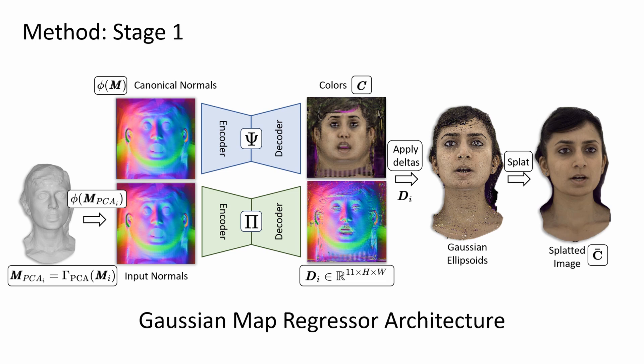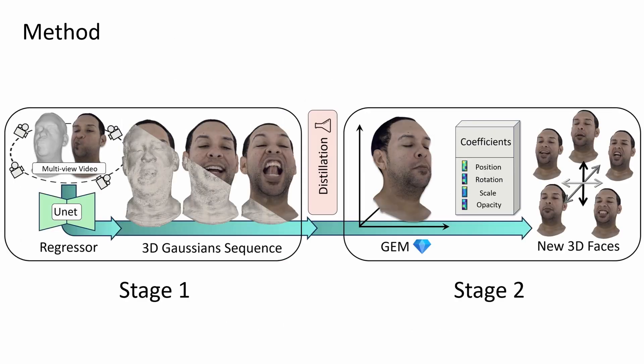Given a multi-view sequence of tracked meshes in full correspondence, our method regresses aligned maps of 3D Gaussians, where each texel represents offsets for rotation, position, scale, and opacity with respect to canonical space. After the style unit network is trained, we generate a sequence of Gaussian maps from the training video.